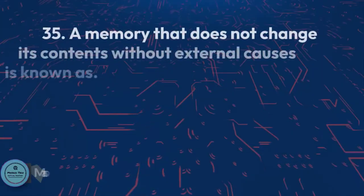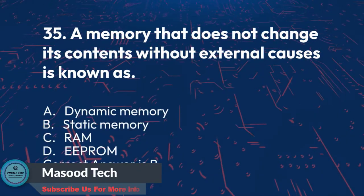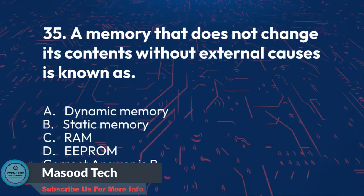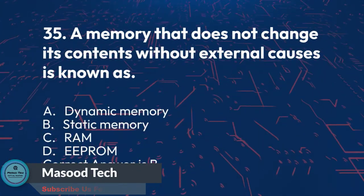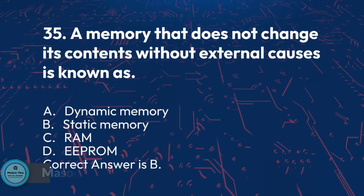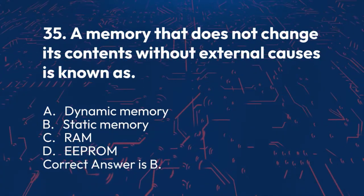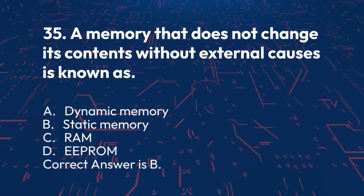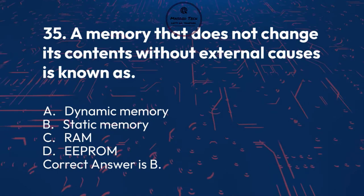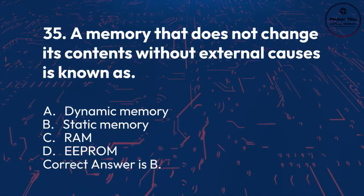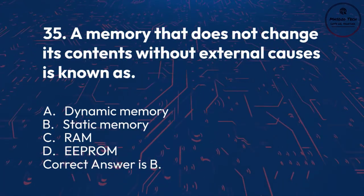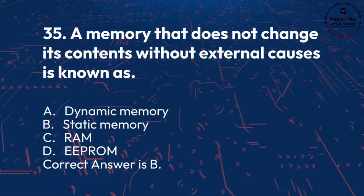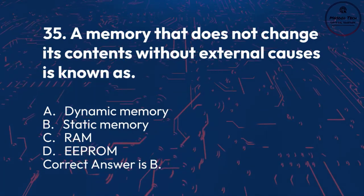Number 35. A memory that does not change its contents without external causes is known as: A. Dynamic memory. B. Static memory. C. RAM. D. EPROM. Correct answer is B.